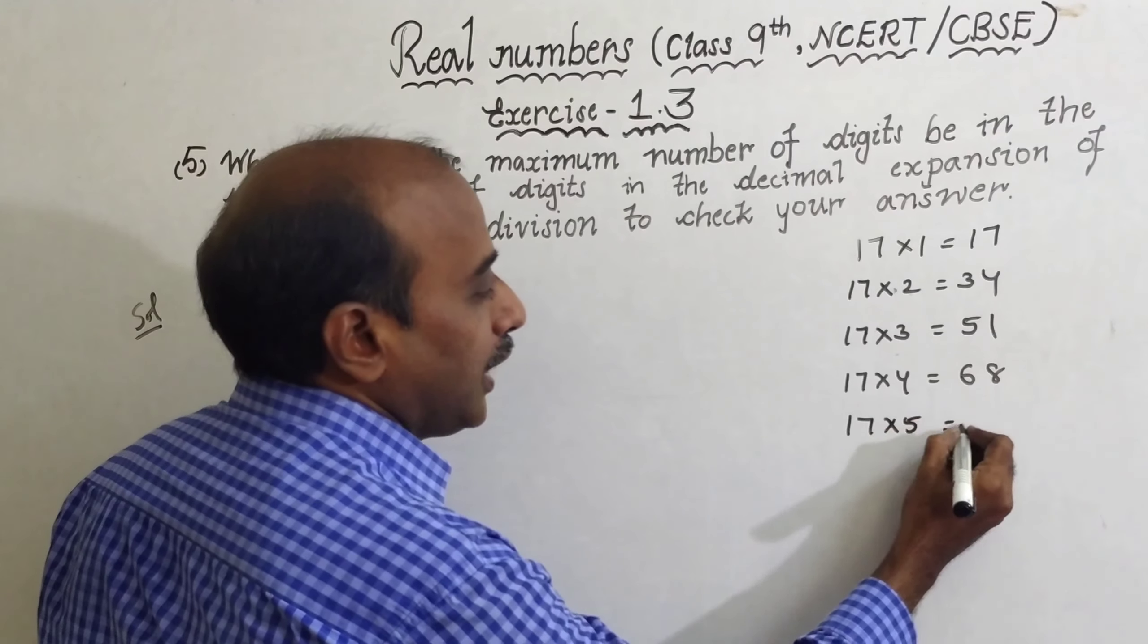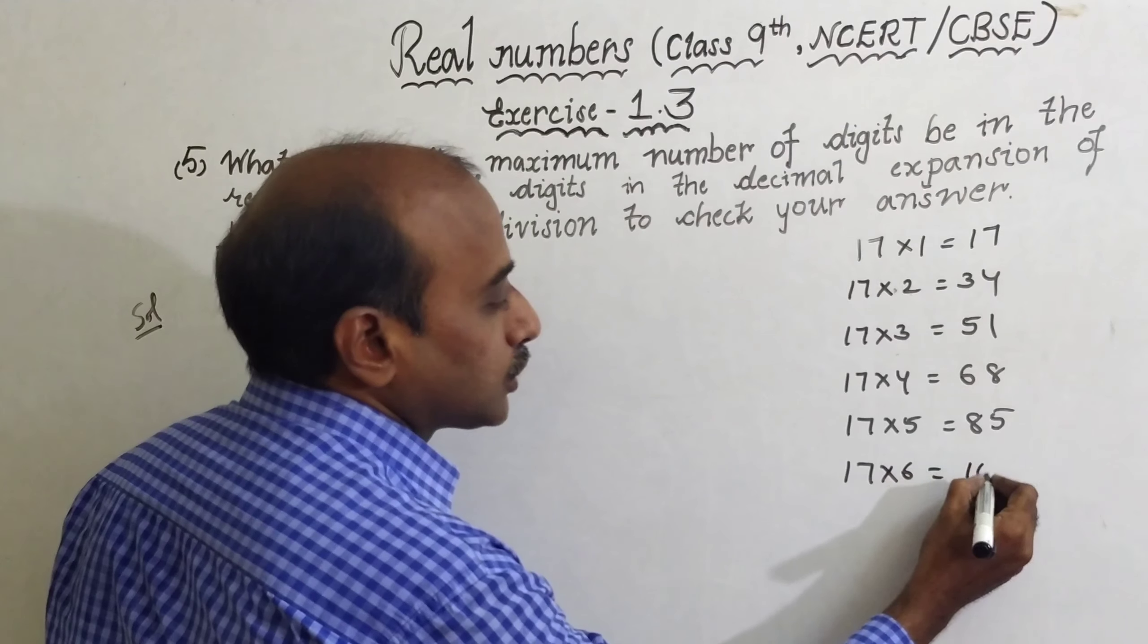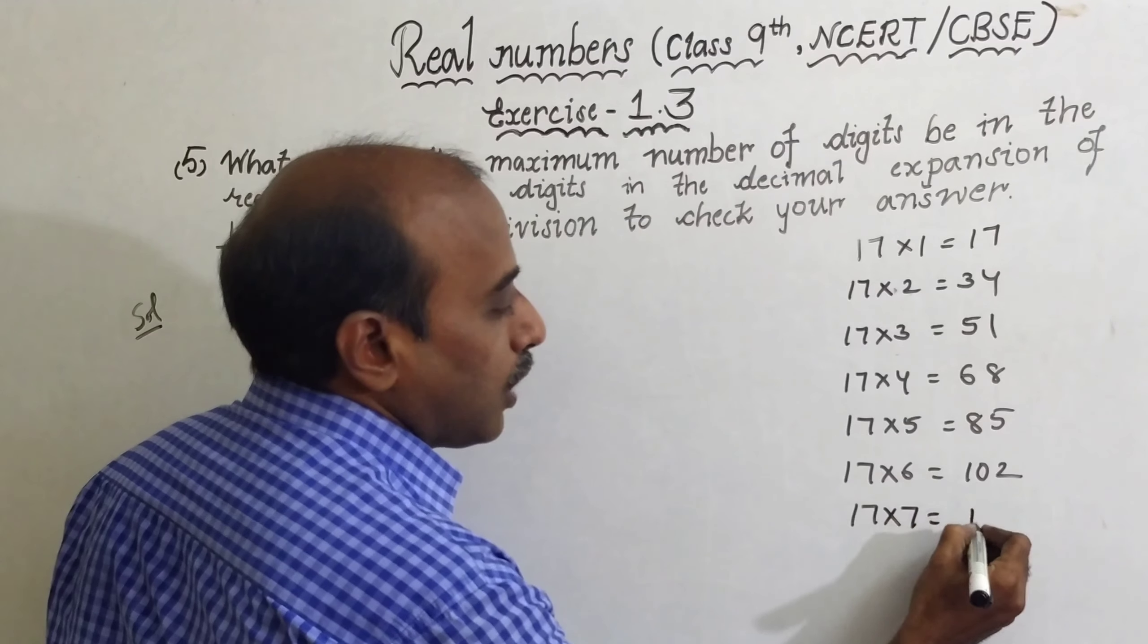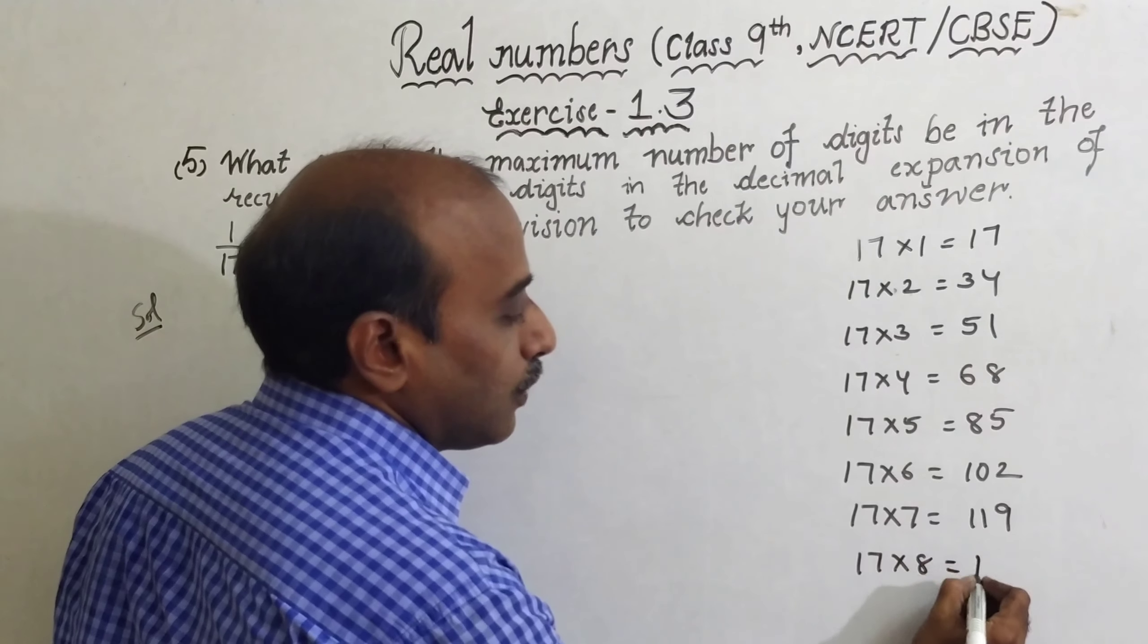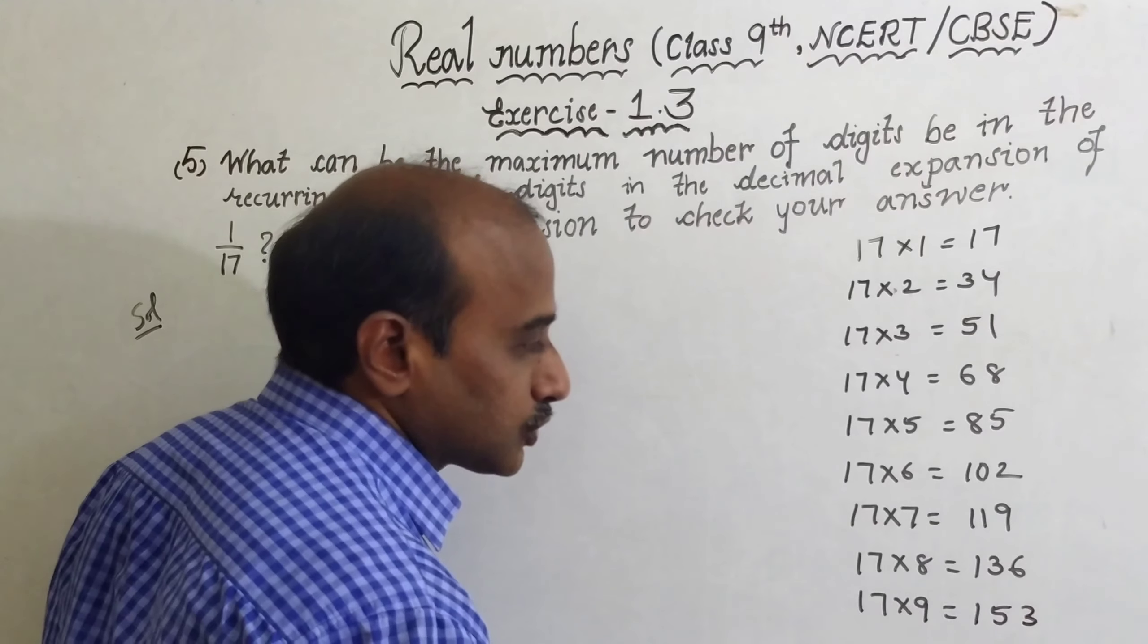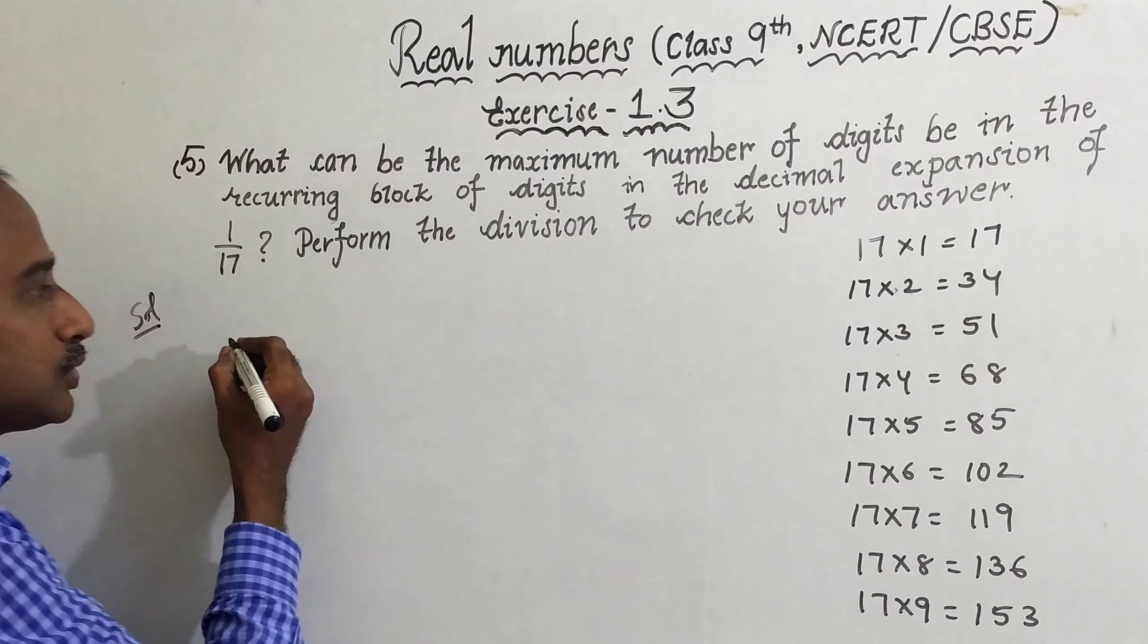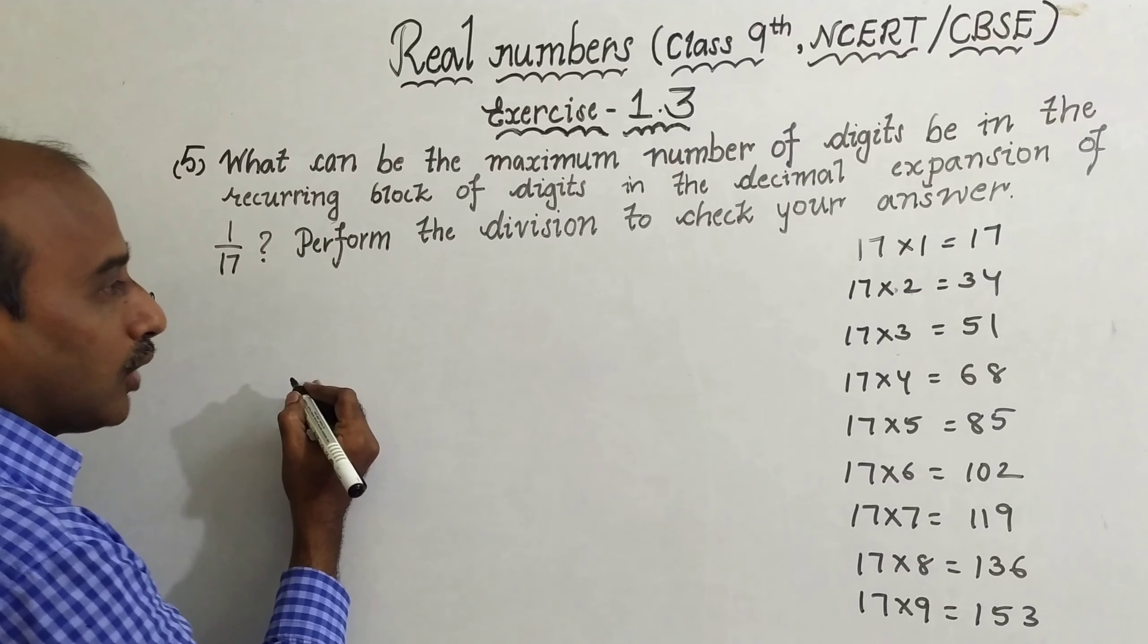17 times 5 is 85, 17 times 6 is 102, 17 times 7 is 119, 17 times 8 is 136, 17 times 9 is 153. So we should know the 17 table, then it's very easy to perform the long division. Now we can do the long division.